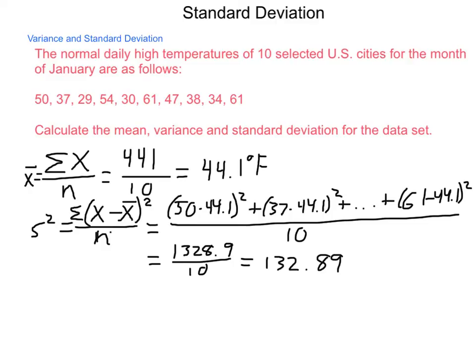So, when we go through from this and find our standard deviation, which is simply the square root of our variance, we'll have the square root of 132 and 89 hundredths, which will be approximately 12 and 15 hundredths of a degree.